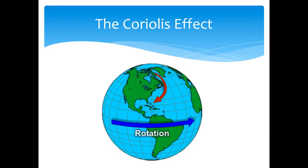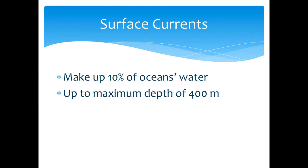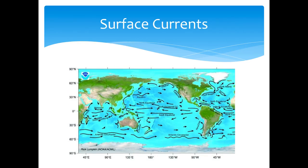Because of the earth's rotation, you can see that wind moves clockwise in the northern hemisphere and counterclockwise in the southern hemisphere. Surface currents are at the top of the water — they move quickly and the water is warm — versus the bottom of the ocean which has cold, slow-moving currents.